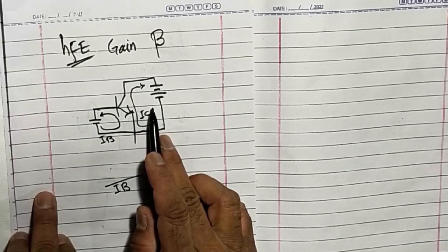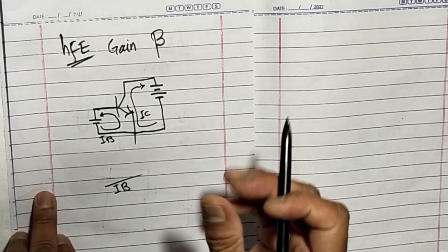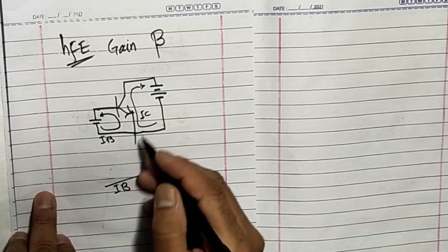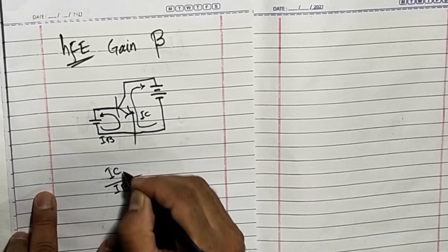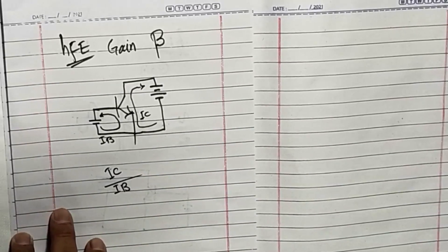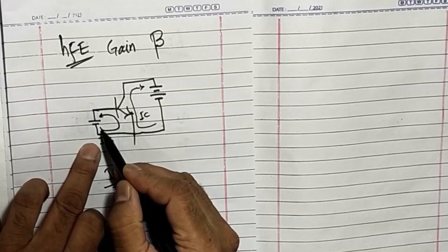The ratio between base current and collector current is called gain, beta, IC over IB. For example, we apply a signal.